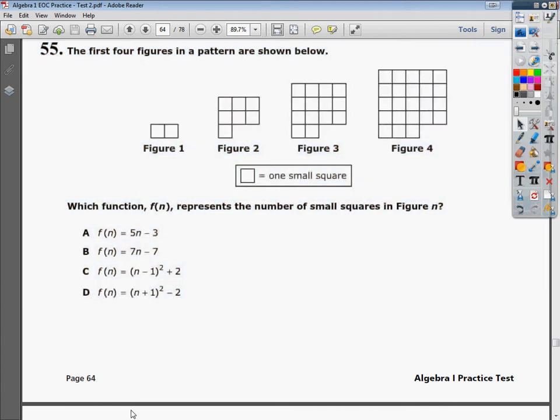Welcome, this is the Algebra 1 Practice Test 2, question number 55. The question says, the first four figures in a pattern are shown below. Which function represents the number of small squares in figure n?